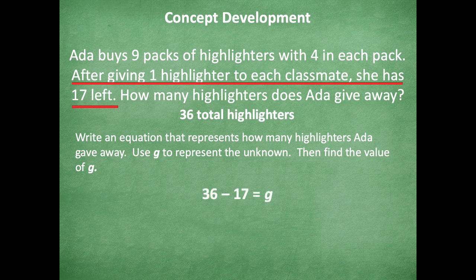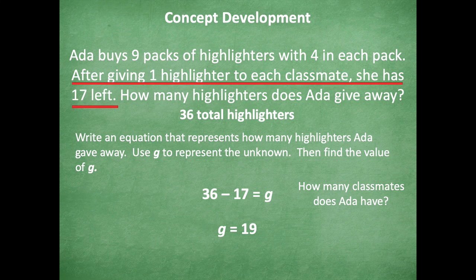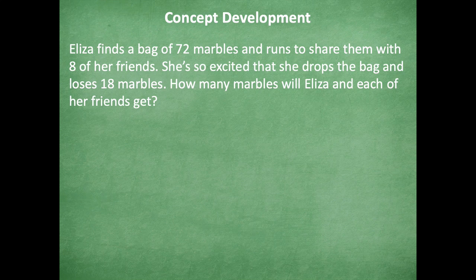Make sure to pause if you need more time. Here's what I came up with: 36 minus 17, because we know the total was 36 and what she had left was 17. To find the other part I subtract, and G represents how much she gave away — so G equals 19. Did you get that too? So how many classmates does Ada have? She gave one highlighter to each classmate and had 17 left, meaning she gave away 19 — so she has 19 classmates.